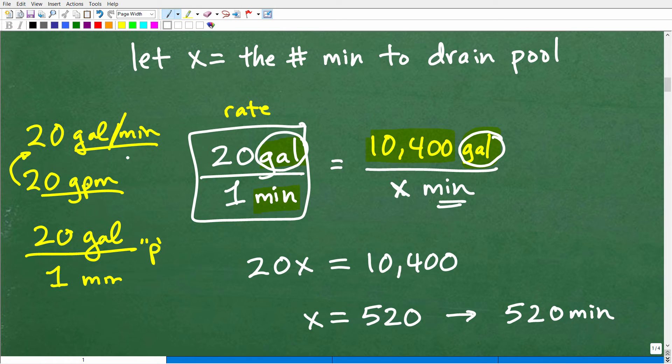So what I want to do is equate the other information in the problem. Okay. So what else has gallons? Well, the pool has gallons, right? So the pool has 10,400 gallons. Now, notice I have gallons in the numerator, so I have to put gallons in the numerator over here in this fraction over X amount of minutes. So I know that if I had a 20-gallon pool, it would take me one minute to drain. Okay. So think of the problem this way. Here is this pump. It's basically telling me, listen, if you had a 20-gallon pool, it would take you one minute. I don't have a 20-gallon pool. I have a 10,400-gallon pool. How many minutes is this going to take?